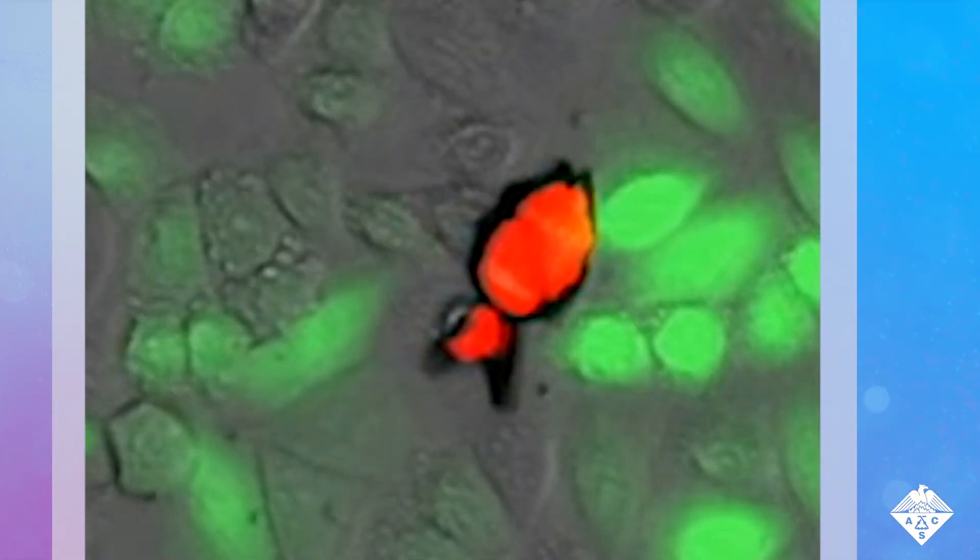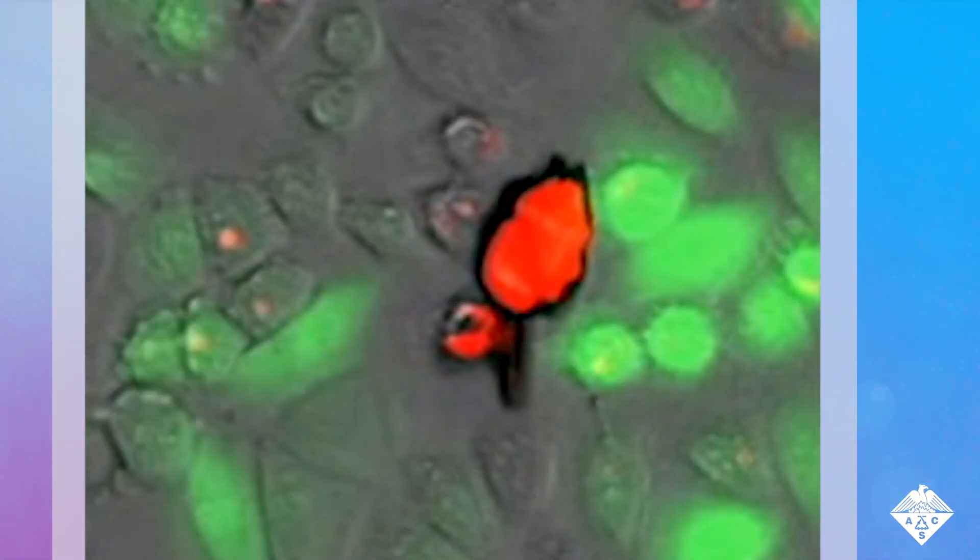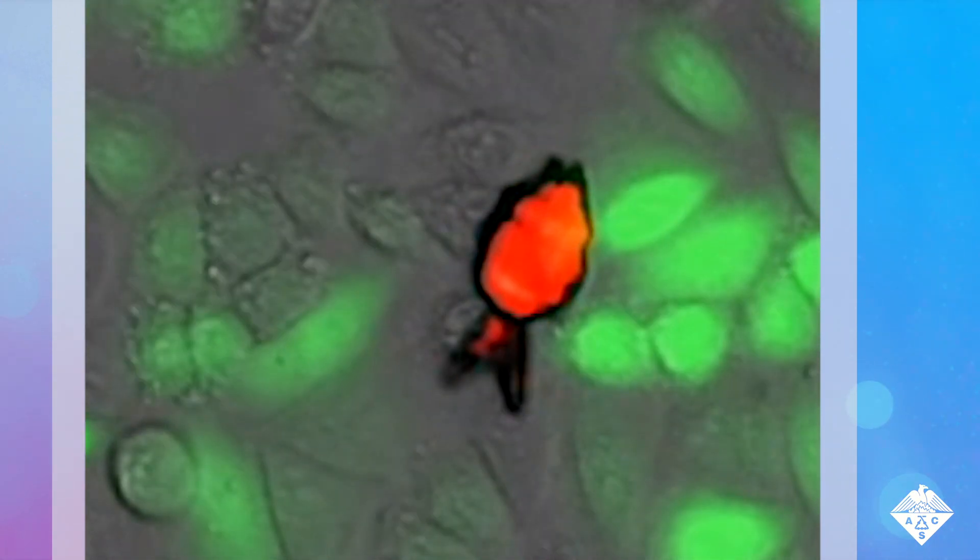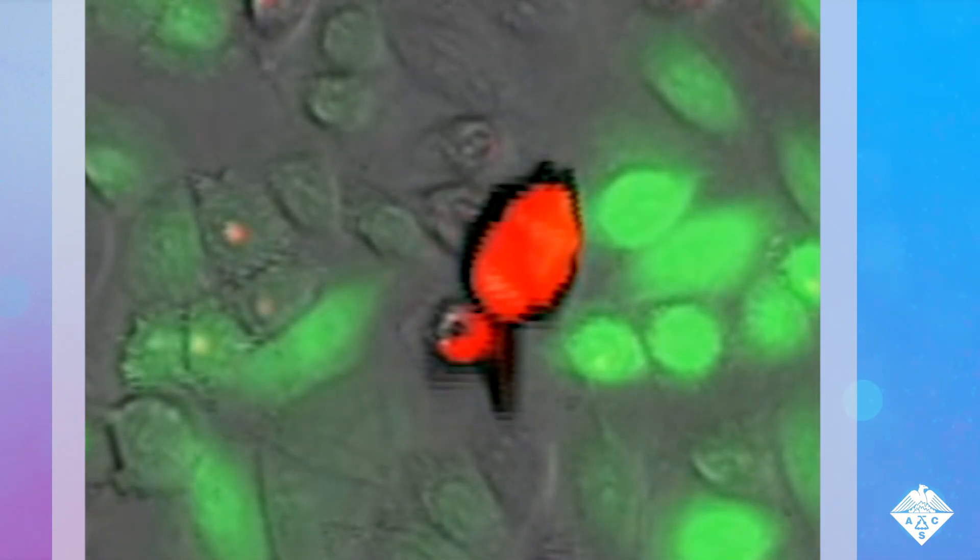When they lowered the pH of the surrounding solution, making it more acidic, the fish opened its mouth to release a chemotherapy drug, shown here in red, which killed the cells closest to the fish.